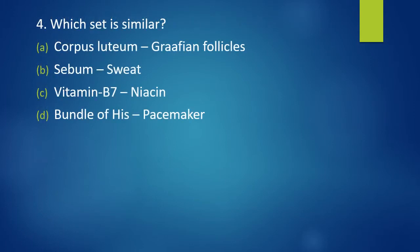Question 4. Which set is similar? Corpus luteum, Graafian follicle; sebum, sweat; vitamin B7, niacin; bundle of His, pacemaker. Which set is similar? Correct answer is option A. Corpus luteum, Graafian follicle.